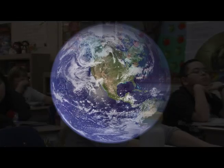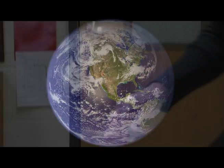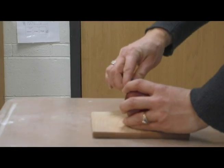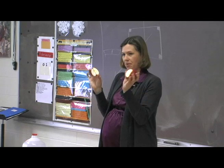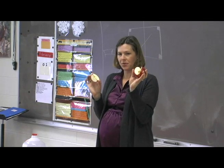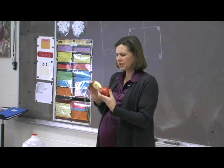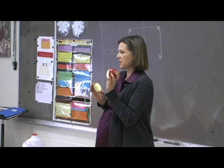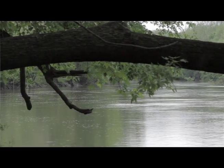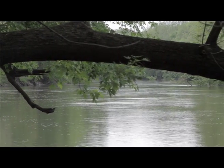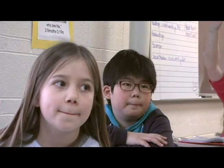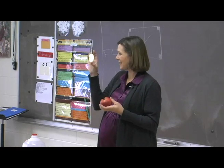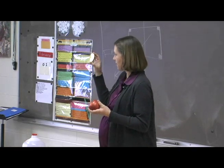What I want us to do is think of this apple as our planet Earth. I've already cut it into four different pieces, so I have a fourth of an apple and three quarters of an apple. What do you think this three quarters represents? It represents the water on Earth — so all of this is our water, and this is all we have for land.